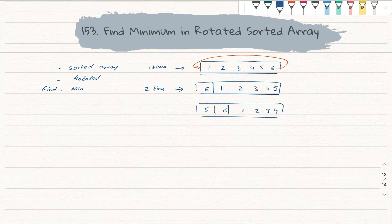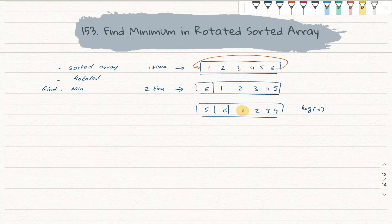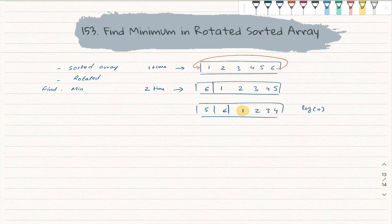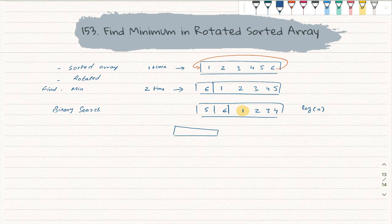We have to find the minimum from this rotated sorted array in log n complexity. The key observations: they are providing a sorted array, it is rotated, and we have to find the minimum value. Since we have a sorted array and need to find something, we will use binary search — but we need to use it in a more advanced way.